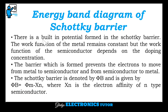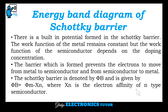There is a built-in potential formed in the Schottky barrier. The work function of the metal remains constant, but the work function of the semiconductor depends on the doping concentration. The barrier prevents electrons from moving between the metal and semiconductor. The Schottky barrier is denoted by φ_b and is given by φ_b = φ_m − χ_n, where χ_n is the electron affinity of the n-type semiconductor.